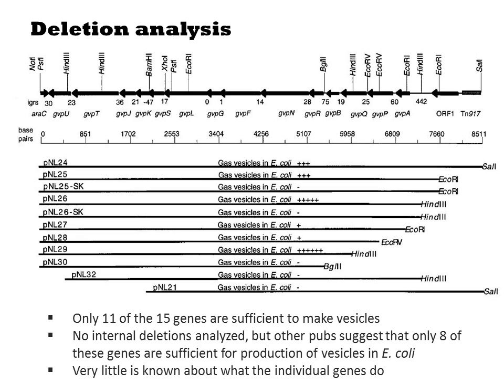Further studies have done more extensive analysis of this gene cluster, systematically removing genes, and it turns out that only 8 of them are needed to produce vesicles in E. coli. Very little is known about what the individual genes do from a molecular function perspective, but that does not limit our ability to use this device as a functional actuator for making bacteria float.